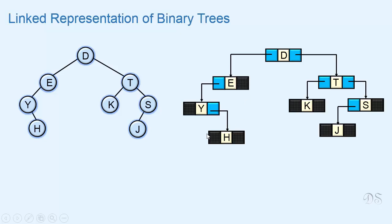For leaf nodes, both left and right child references are null. Now to access the nodes of this tree, we will maintain a reference that refers to the root node of the tree. If the tree is empty, this reference will be null.